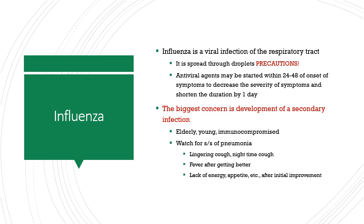Influenza is a viral infection of the respiratory tract spread through droplet — the person needs to be on precautions. Antiviral agents are effective if started within 24 to 48 hours of onset and can decrease the severity of symptoms and shorten the duration by one day. The biggest concern is development of a secondary infection. People can become severely dehydrated, and the elderly, the young, and the immunocompromised are at risk for pneumonia. Watch for signs of lingering cough or nighttime cough, fever after seeming to get better, lack of energy, lack of appetite, and any new signs or symptoms after they initially looked like they were getting better.